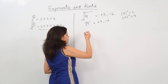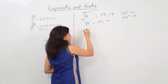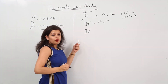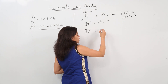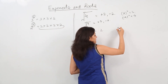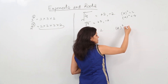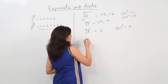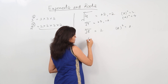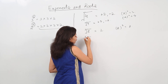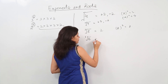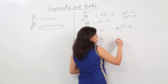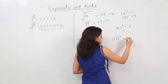Whereas if we have the cube root, the cube root of 8 is 2, because 2 cubed is 8. If we have the 4th root of 16, the answer is 2 because 2 raised to power 4 is 16.